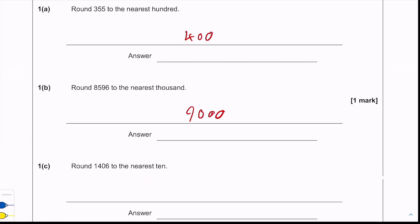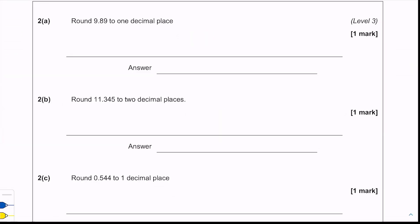For part c, we need to round 1,406 to the nearest ten. We look at the single units column — it's five or above — so we need to round up and we get 1,410.